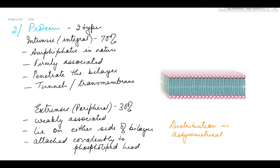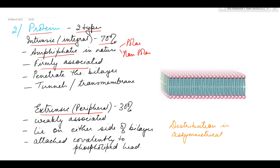The other important substances in the cell membrane are proteins, which are divided into two types based on their position. Intrinsic proteins constitute 70 percent of the total protein. They are also amphiphatic in nature and are firmly associated with the cell membrane — they cannot be separated easily. Integral proteins penetrate the phospholipid bilayer, forming hydrophobic interactions with the nonpolar ends of the phospholipids, which is why they are firmly associated.